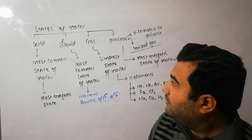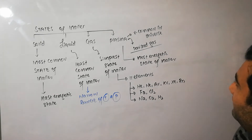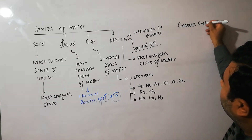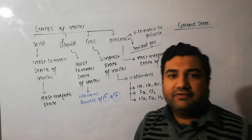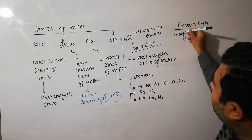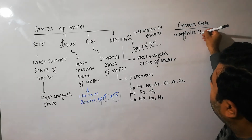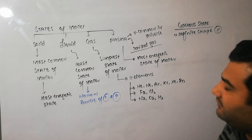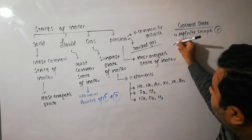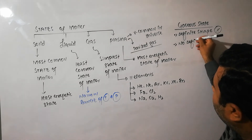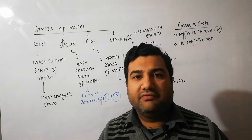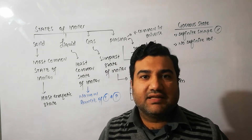The topic of our discussion that we are going to start is the gaseous state. Gases have different properties. First, gases do not possess any definite shape — they attain the shape of the container in which they are enclosed. Second, gases do not possess any definite volume — they occupy whatever volume is available to them, and even a small amount of gas can cover a huge volume.